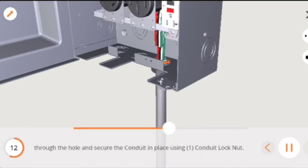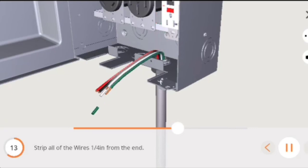Pull the wires through the hole and secure the conduit in place using one conduit lock nut. Strip all of the wires one quarter of an inch from the end.